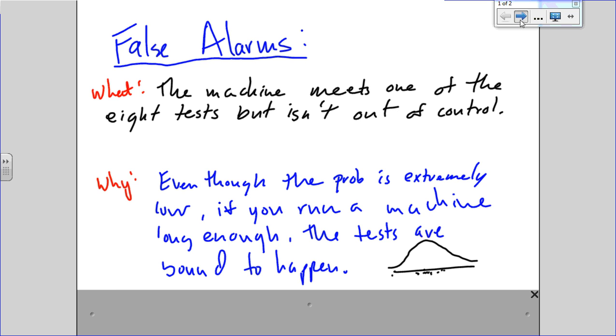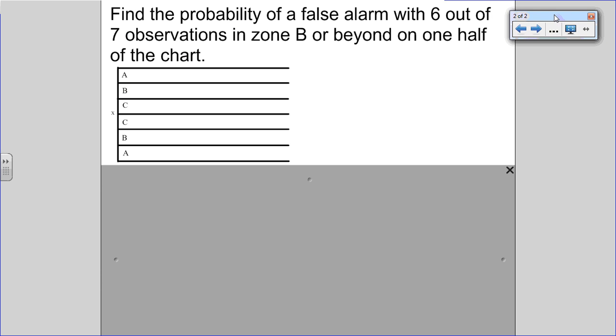So knowing those definitions of what it is and why it happens is extremely important. Now, I made up a test here to practice how to find the probability of these tests happening. It says, find the probability of a false alarm with six out of seven observations in a row in zone B or beyond on one half of the chart. So one situation that it could look like is I might have one, two, the third one isn't, four, five, six, seven, eight. Oops, I guess it says seven. Sorry about that. So I can connect all these, and this would meet this test.